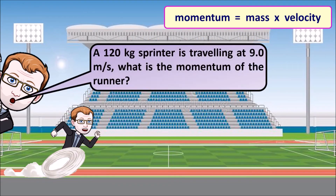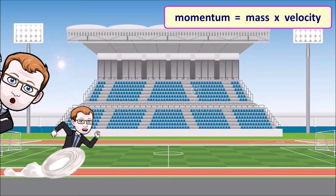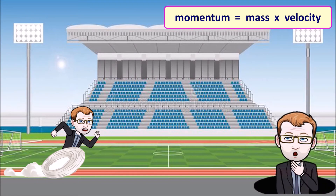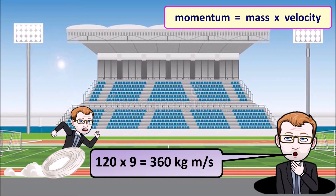Looking at another example: if we've got a 120 kilogram sprinter travelling at 9 meters per second, what is its momentum? 120 times 9 gives us a momentum of 360 kilogram meters per second.